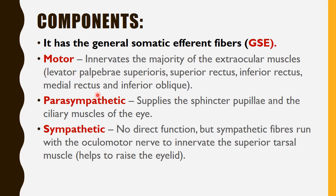The autonomic component provides parasympathetic supply to the sphincter pupillae muscle and the ciliary muscles of the eye. The sympathetic component has no direct function, but sympathetic fibers run with the oculomotor nerve to innervate the superior tarsal muscle, which helps to raise the eyelid.